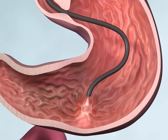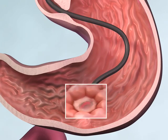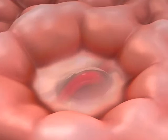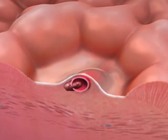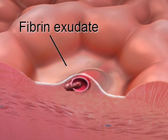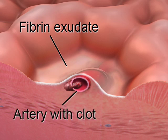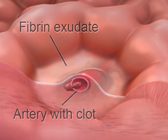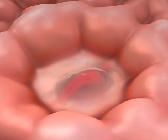The peptic ulcer, in this example, has eroded through the mucosa and submucosa into an underlying artery that produces the bleeding. The ulcer base is covered by a fibrin exudate. The non-bleeding visible vessel, composed of the artery and clot plugging the defect in the side wall of the artery, appears as a nipple-like protuberance in the ulcer base.